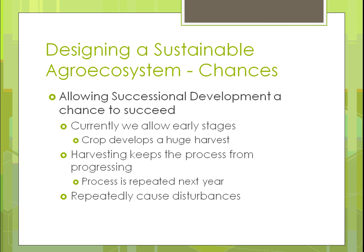It might be that we're not allowing enough time for that successional development to work — it just needs more time. Instead of throwing fertilizer on because it didn't recover in a year, maybe we need to start using crops that produce a good harvest but also allow some of the nutrients to stay in the soil, and not do things that are going to disrupt that recovery process. Of course, it can also take too long.